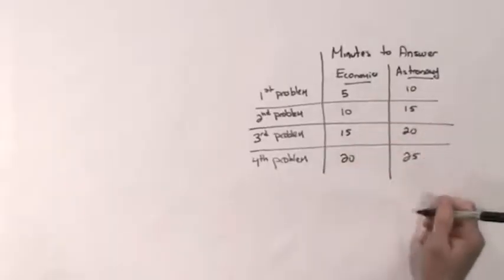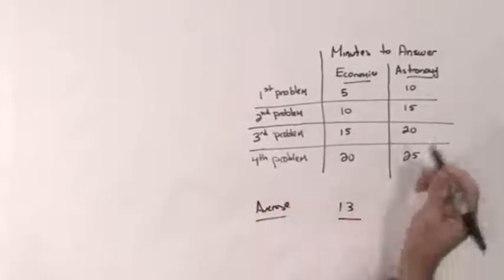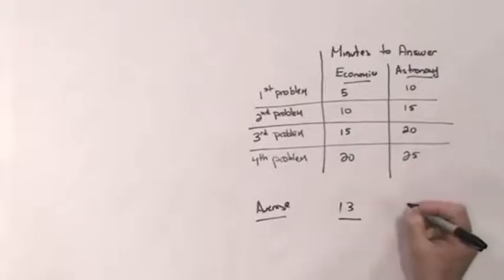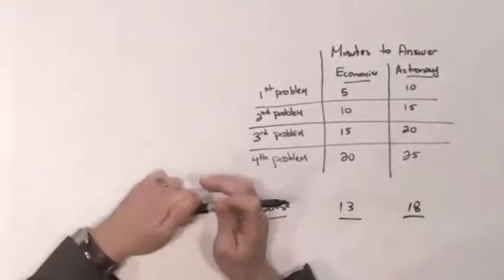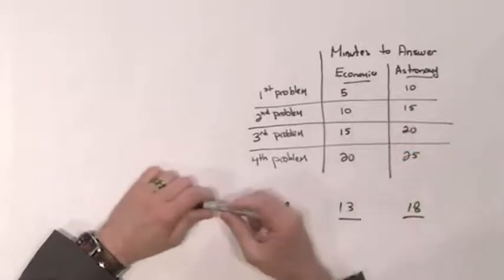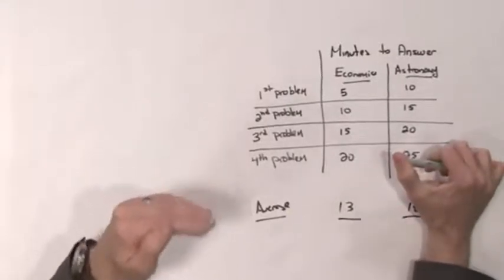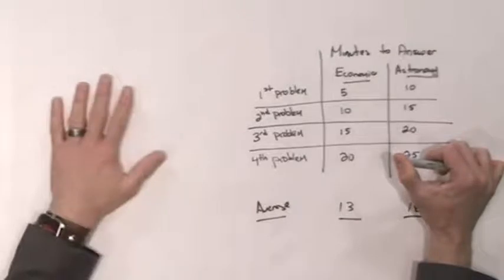The answer is: you can't decide, because you don't have all the information. Many would say answer economics since on average it takes about 13 minutes versus more for astronomy. But that's not correct — each problem takes a different amount of time. The principle says to consider the value of your next action, not the average action.